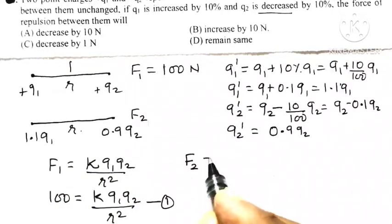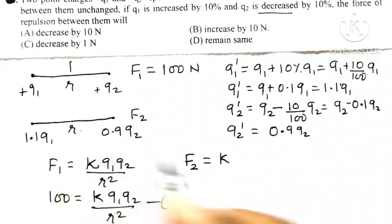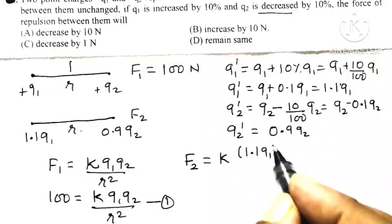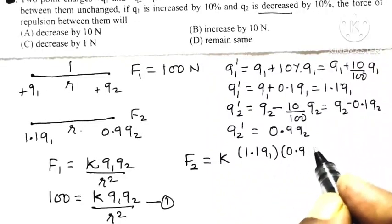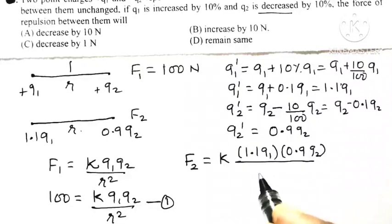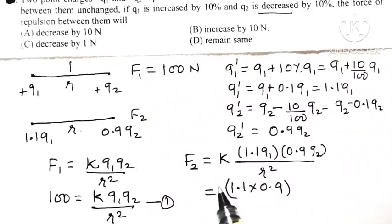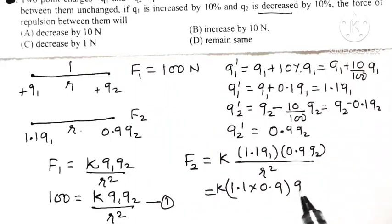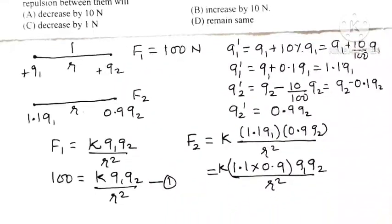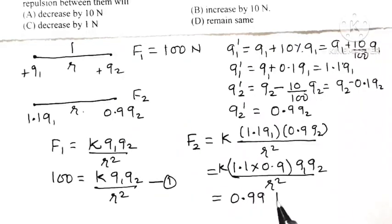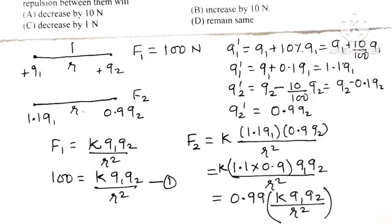The new force F2 equals K times 1.1 Q1 times 0.9 Q2 divided by R squared. That simplifies to 1.1 times 0.9 times K Q1 Q2 divided by R squared, and 1.1 times 0.9 equals 0.99.